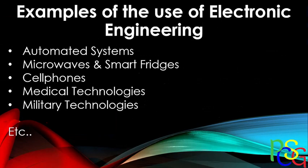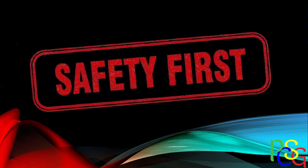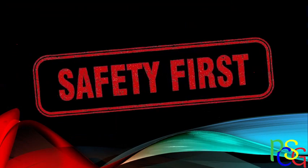Cell phones use electronics technology — CPUs, GPUs, and different components that carry out logical tasks, allowing you to touch your phone and input instructions. Medical technologies and military technologies also fall under electronic engineering because they require logic, and the actual programming or transmission of signals and instructions. All of these things fall under electronic engineering.